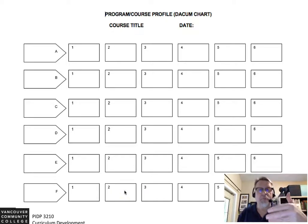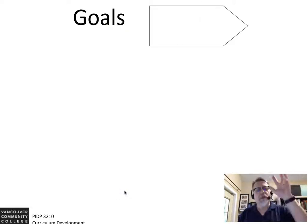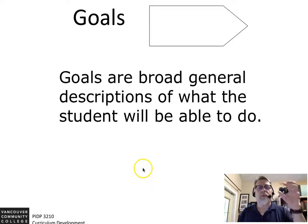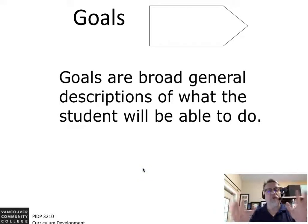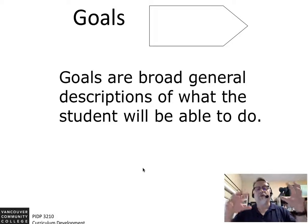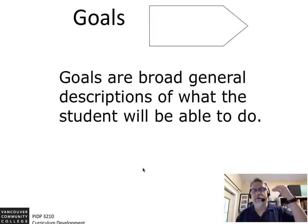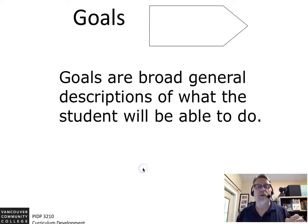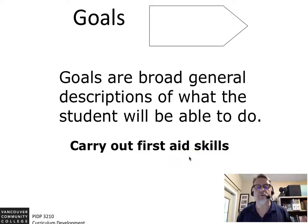This example is a wonderful starting point. It's extremely important that you understand the difference between the goal and the objective. Goals are a broad, bigger description of what you want the students to do. When dealing with performance objectives or student performance, everything involves a verb — this is what the student will do. This is not what you're going to do as a teacher; this is not how you're going to instruct. For example, 'carry out first aid skills' is what the student will be able to do — 'carry out' is the verb.